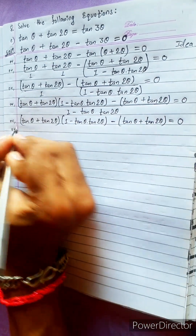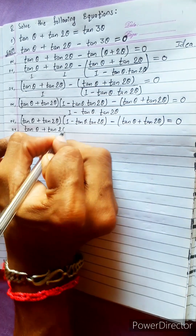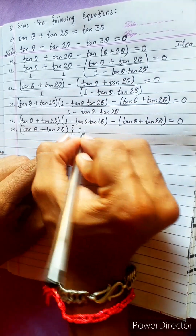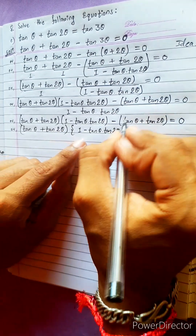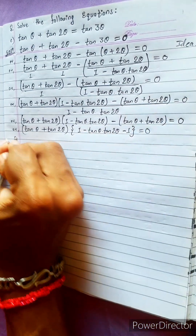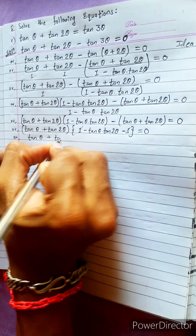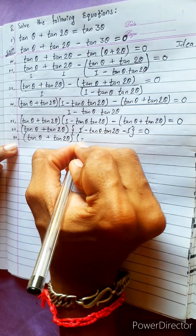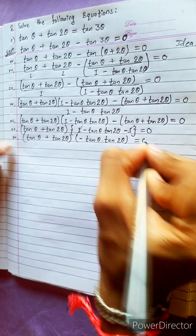Multiplying through by the denominator still gives 0. So now just take the common factor: take (tan θ + tan 2θ) common. What remains is (1 - tan θ · tan 2θ) from the first part, and from the second part only minus 1 remains. Then the 1 and minus 1 cancel.